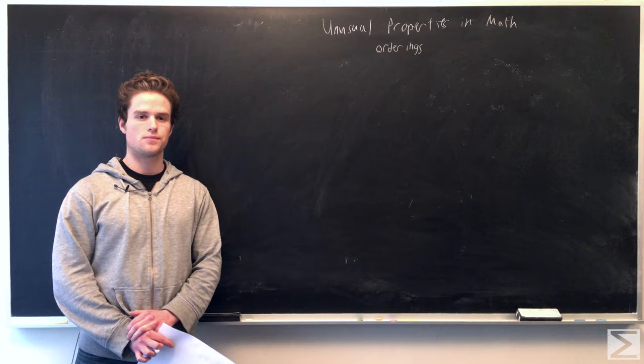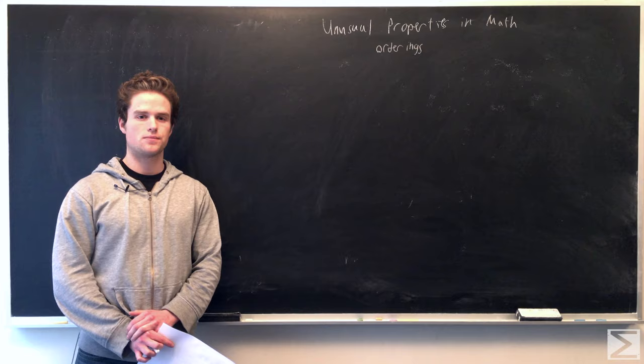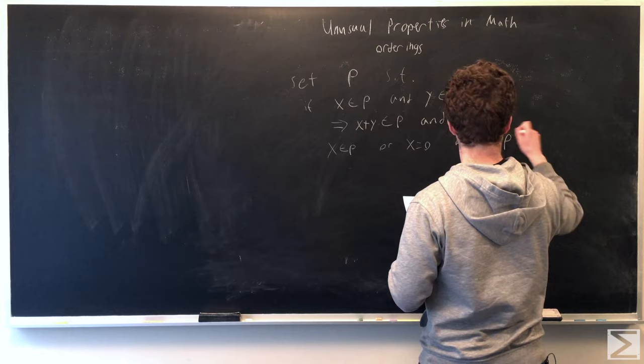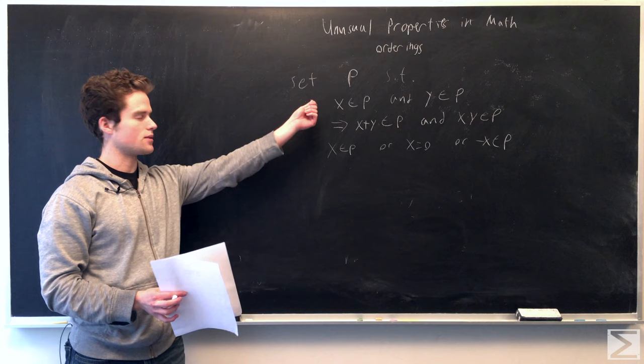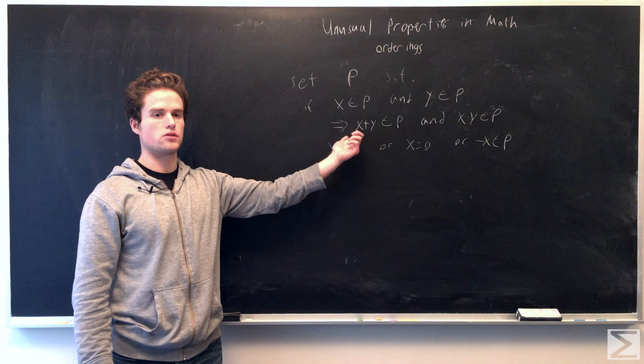Today we're going to talk a little bit about fields and orderings. So first, we're going to say a field can be ordered if we have a subset of the field P, such that if x is in P and y is in P, then it is closed under multiplication and addition of the field.